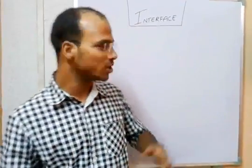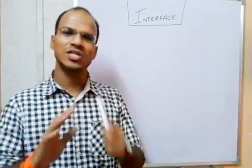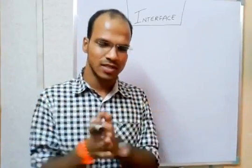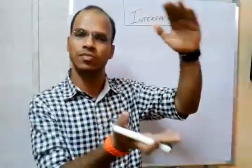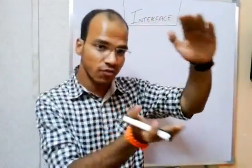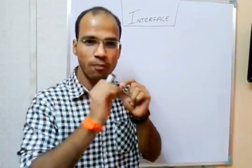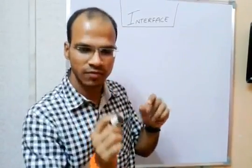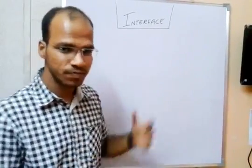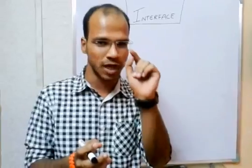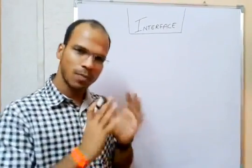Today's section is totally dependent on something called an interface. Last time we saw abstract classes. A class is a block where you can define variables and methods. But when you don't know the definition of a method, you have to declare it, and a declared method is called an abstract method. A class which has at least one abstract method is called an abstract class.